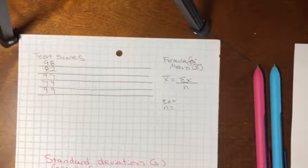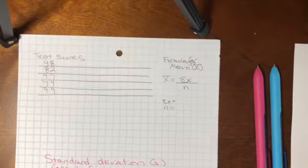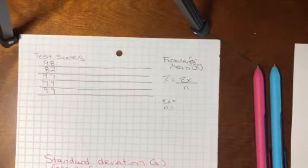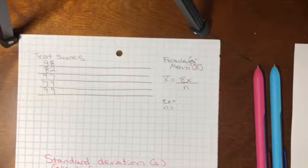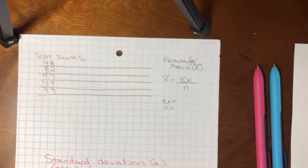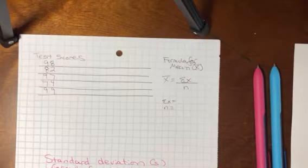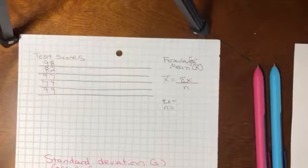If I say the mean test score for my class was 90 or the sample of my class was 90 I'm using that number to approximate what most people scored. And then of course third we want to describe variability which is how well that middle point fits each observation.